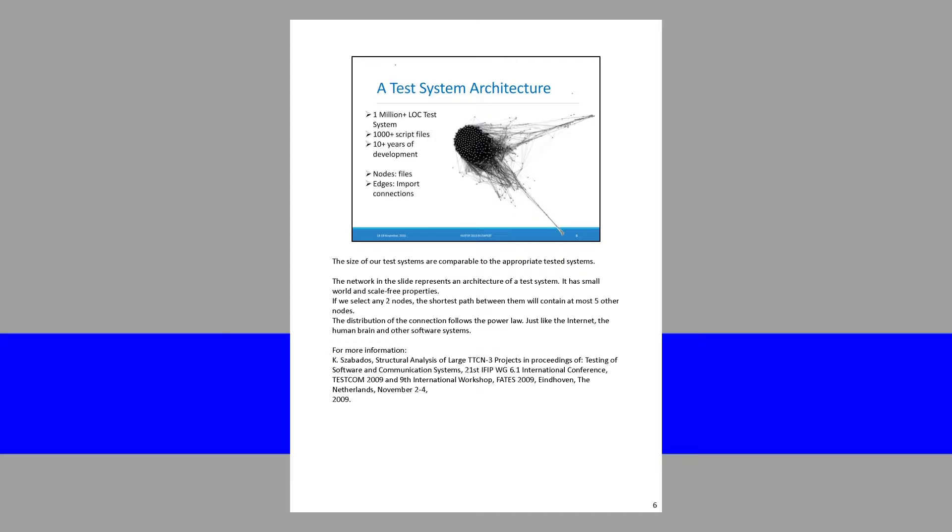The test system you can see on the screens contains more than a million lines of script code organized in more than a thousand files. Each small dot you see is just a script file, and the connections between them are just imports — dependency connections. This system was developed for more than 10 years by at least 150 people in different organizations, different continents, and different time zones.